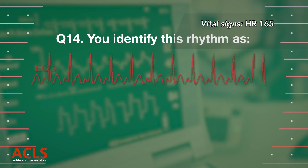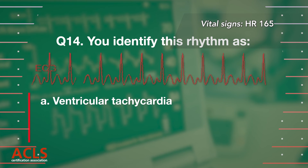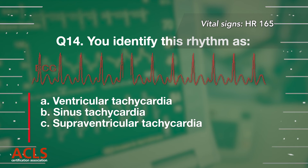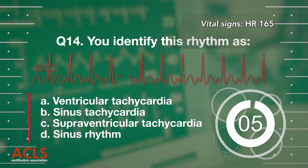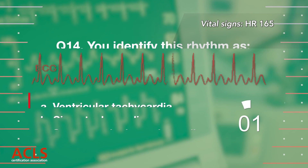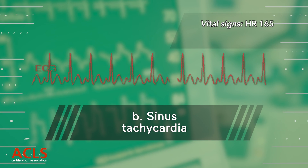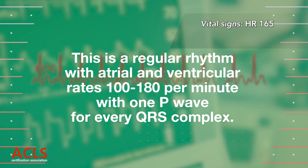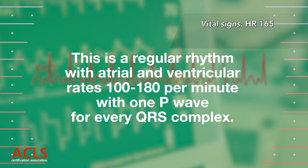Question 14: You identify this rhythm as: A) Ventricular tachycardia, B) Sinus tachycardia, C) Supraventricular tachycardia, D) Sinus rhythm. Correct answer: B) Sinus tachycardia. This is a regular rhythm with atrial and ventricular rates of 100–180 per minute, with one P wave for every QRS complex, and QRS complexes less than 0.09 seconds.